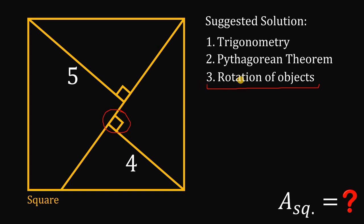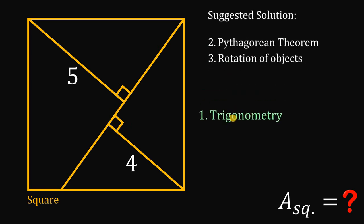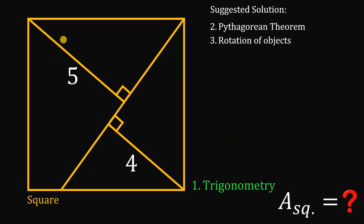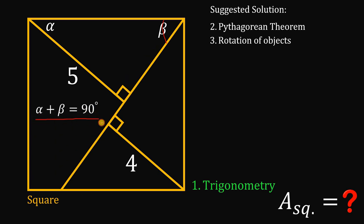Let's start with our first strategy, which is using trigonometry. Let's call this angle right here alpha, and this angle right here must be equal to beta. Take note that alpha plus beta must be equal to 90 degrees because they are the acute angles of a right triangle. Since alpha plus beta equals 90 degrees and this corner is 90 degrees, if this is beta, the other angle must be equal to alpha.